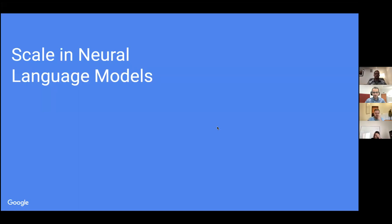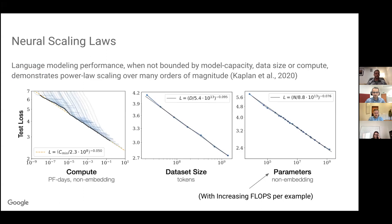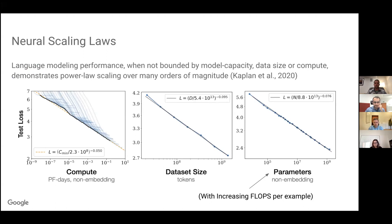Let me give a little background on scaling neural language models. There was some really good work coming out of OpenAI in early 2020 on neural scaling laws. The idea was that language modeling performance follows a power law curve over many orders of magnitude, which gives us confidence that scaling models can really lead to good performance as we continue to increase model size beyond the 2x, 10x, 100x of current sizes.